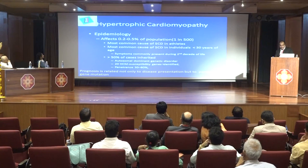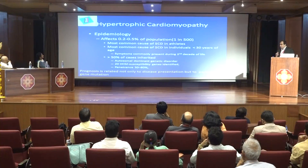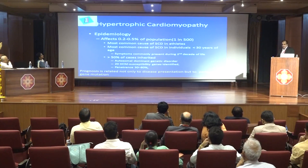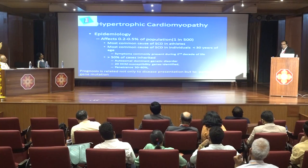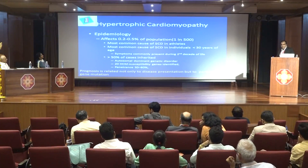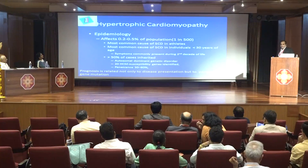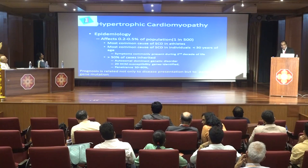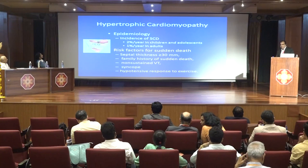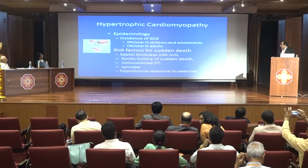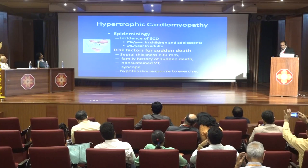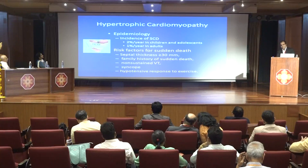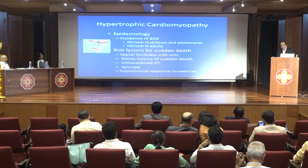Hypertrophic cardiomyopathy affects 0.2 to 0.5% of the population and is the most common cause of sudden cardiac death in athletes or individuals less than 30 years of age. It usually occurs in adolescents. More than 50% of cases are inherited as an autosomal dominant disorder. At least 20 HCM susceptibility genes have been identified with 30 to 80% penetrance. Prognosis is related not only to disease presentation but also to the particular gene mutation. Risk factors for sudden death include septal thickness greater than 30 mm on echo, family history of sudden cardiac death, non-sustained VT, syncope, or hypertensive response to exercise.